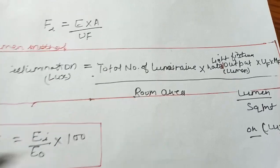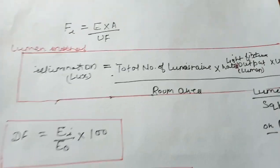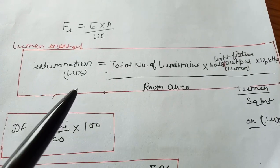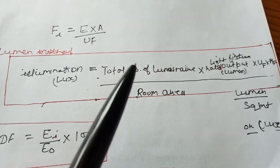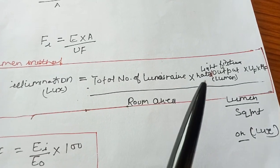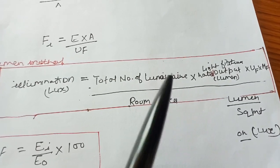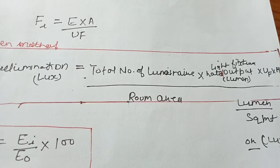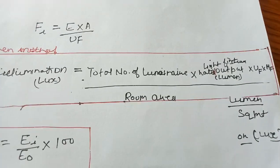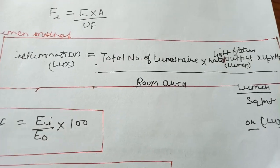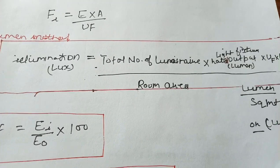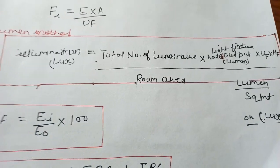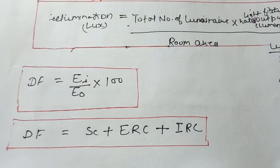The basic lumen method formula is: Illumination E equals the total number of luminaries multiplied by the rated output of one lamp (in lumens), multiplied by the utilization factor, multiplied by the maintenance factor, divided by the room area. This gives lumens per square meter. The definition of illuminance is luminous flux per area, and understanding this formula helps understand the definition.